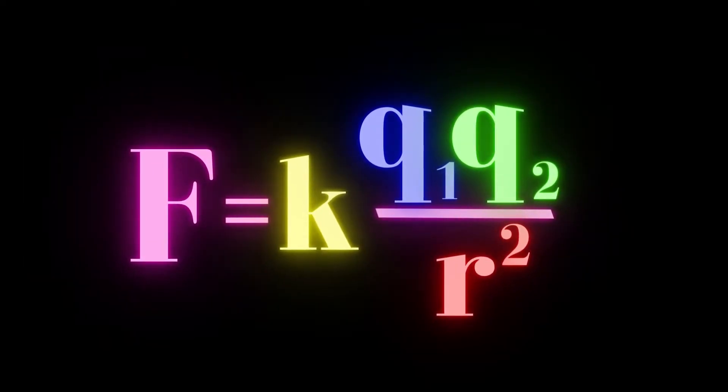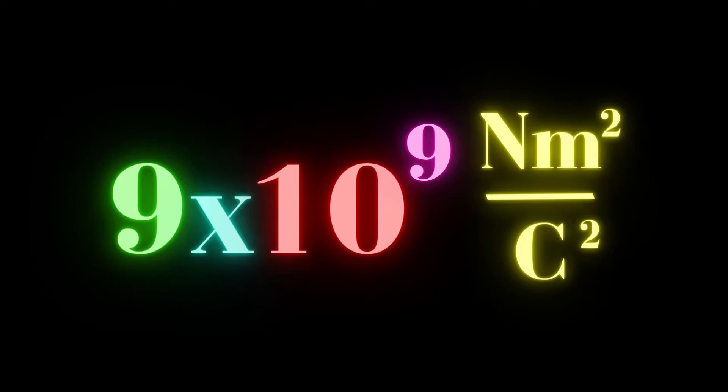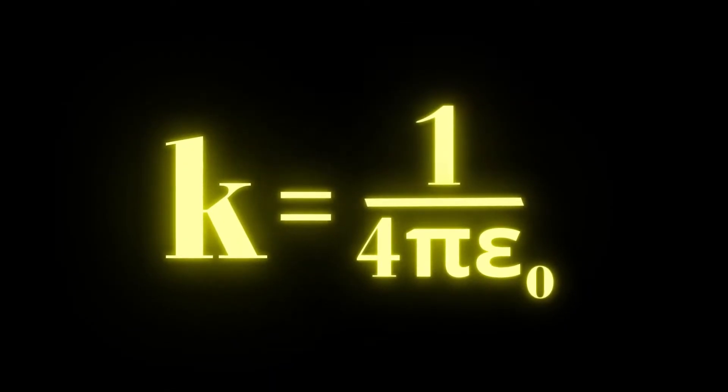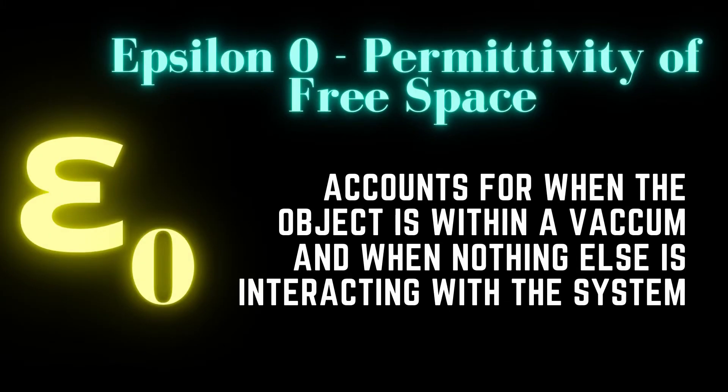Let's try to quantify what's happening. Coulomb's Law: F equals k times q1 times q2 — the charges of the objects — over r squared, which is the distance between the two objects squared. The constant k here is Coulomb's constant, equal to 9 times 10 to the 9th newton·meter squared per coulomb squared. In equation form, k equals 1 over 4π epsilon-naught. Epsilon-naught accounts for the permittivity of free space — basically we're saying this is in a vacuum, accounting for the free space around an object.